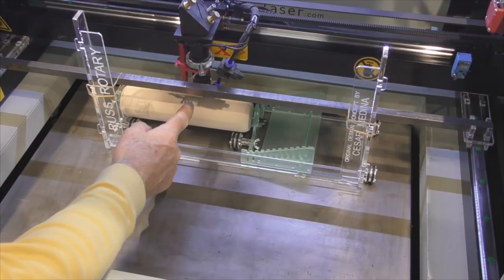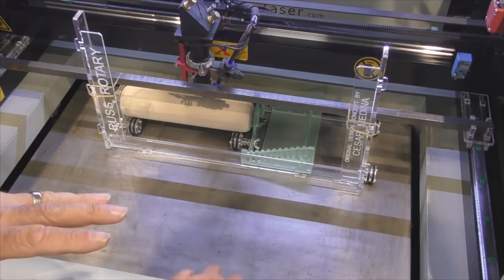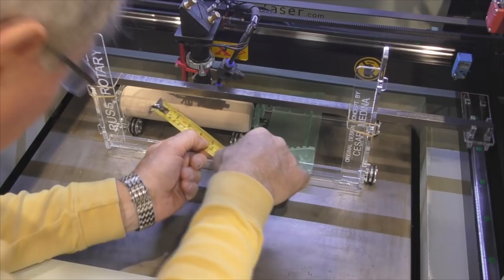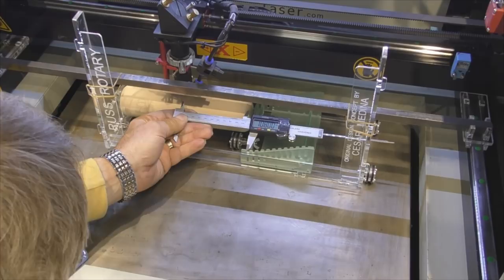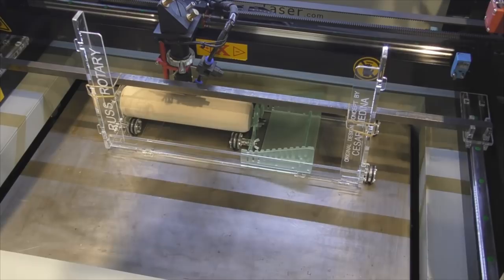We've got the bearing blocks all connected up to this bar and everything is running nice and true. What we've now got to do is set the head so that the head is in the center of the job. I'd say that 215 or 216, we set that up to 108, so that's where I'm going to set my datum, my origin.